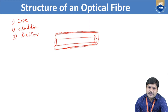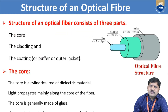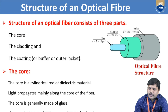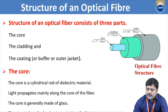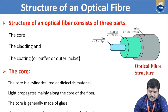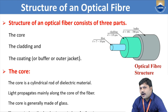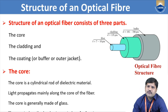Looking at the diagram, we can observe three layers of optical fiber. The first is the core material, which is the central part of the optical fiber. The core is a cylindrical rod of dielectric material with a diameter of 7 to 10 micrometers. Light propagates mainly along this core of the fiber. The core is generally made up of glass material.